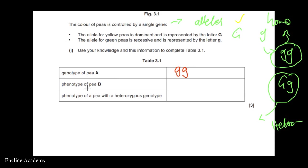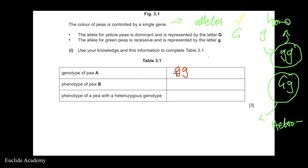The genotype refers to the genes in the cells — the genetic makeup. The phenotype is the physical characteristic we can observe. The genetic makeup of Pa is lowercase g lowercase g, because the only way it can be green is if it has two recessive alleles. If an uppercase G were introduced, the dominant yellow trait would take over and the pea would be yellow instead.